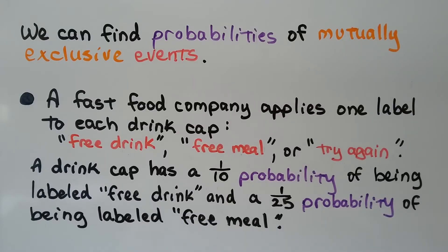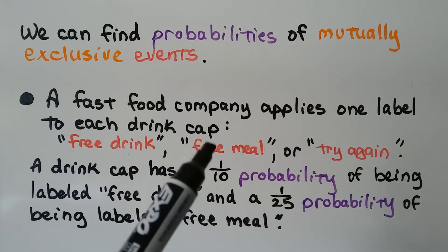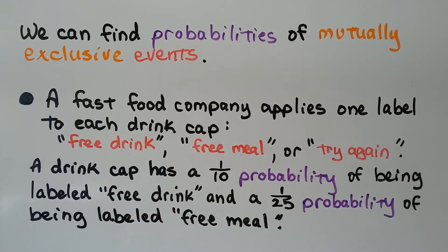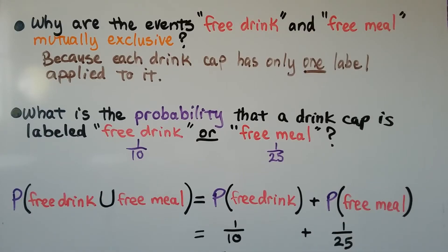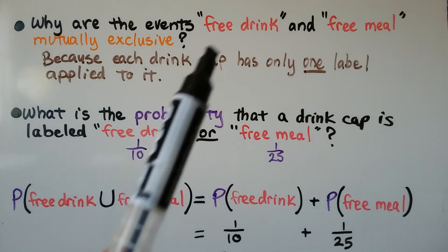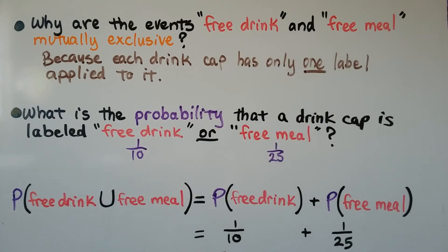We can find probabilities of mutually exclusive events. A fast food company applies one label to each drink cap: free drink, free meal, or try again. A drink cap has a one-tenth probability of being labeled free drink and a one-twenty-fifth probability of being labeled free meal. The events free drink and free meal are mutually exclusive because each drink cap has only one label applied to it — you'll get either free drink or free meal, not both.